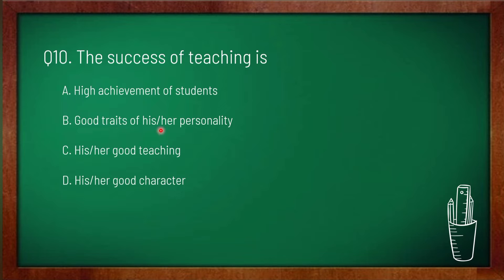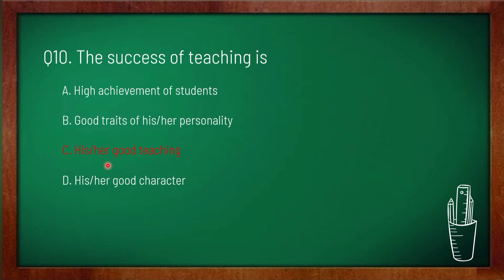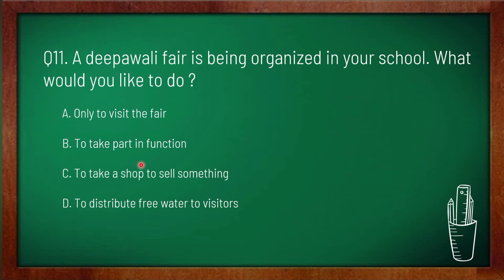Question 10: the success of teaching is — option A: high achievement of students, option B: good traits of his or her personality, option C: his or her good teaching, option D: his or her good character. A successful teacher is one whom students remember with great pleasure, who knows how to teach well so that each student understands, teaching clearly and briefly on the subject. So option C — good teaching — is correct. Question 11: a probability fair is being organized in your school; what would you like to do?